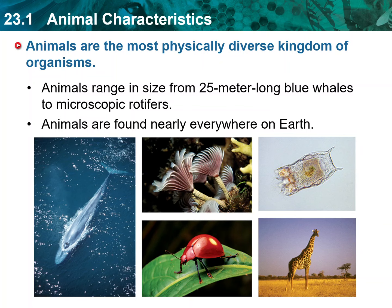First main idea: Animals are the most physically diverse kingdom of organisms. More than one million species of animals have been described so far, and scientists predict that tens of millions more have yet to be discovered.